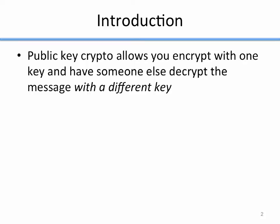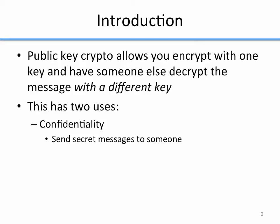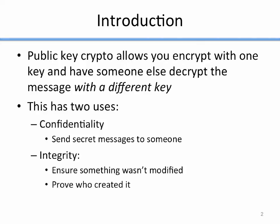Public key crypto allows you to encrypt with one key and have someone else decrypt the message with a different key. There are two keys — when you encrypt with one, you decrypt with the other. This has two main uses: first is confidentiality, where I can use this to send secret messages to someone, and the other is integrity, where I can ensure that something wasn't modified or prove who created it. Those two are really very similar claims.